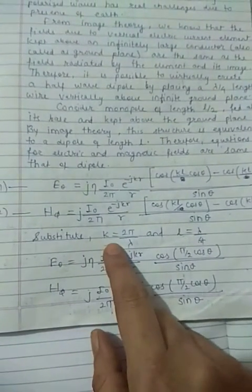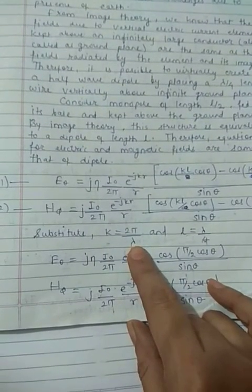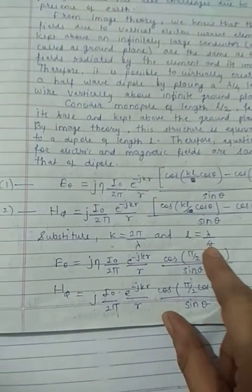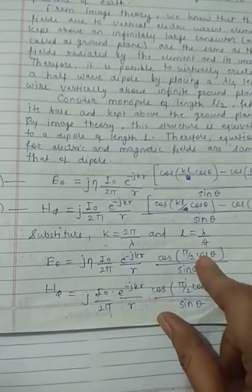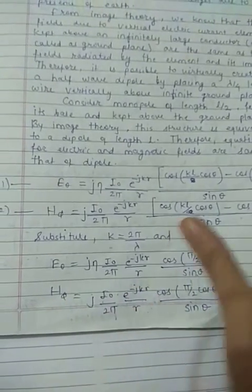Only in this case, we will substitute k equal to 2 pi by lambda which is the space constant and L is equal to lambda by 4 length of dipole. So by substituting, equations for E theta and H phi become like this.